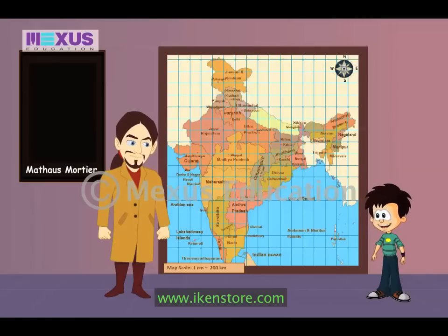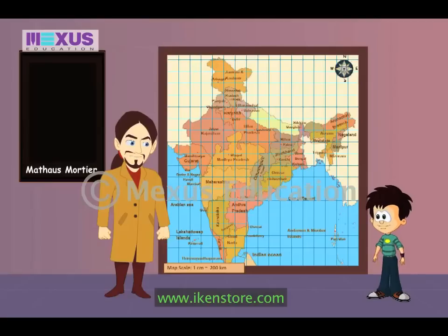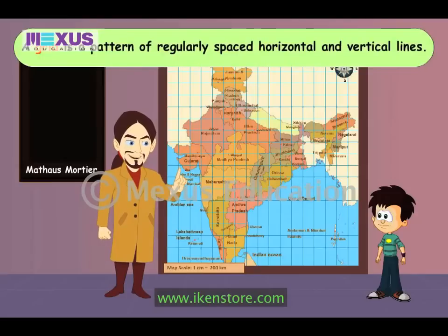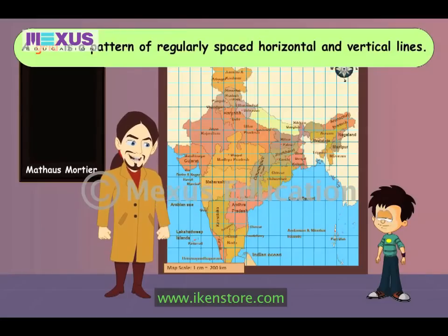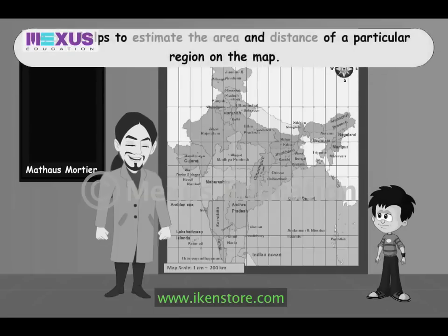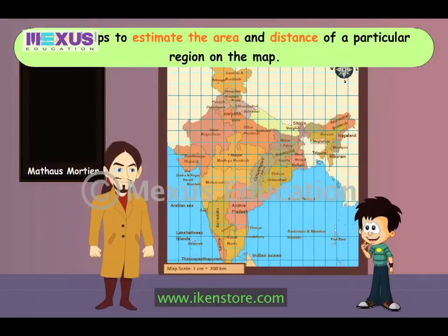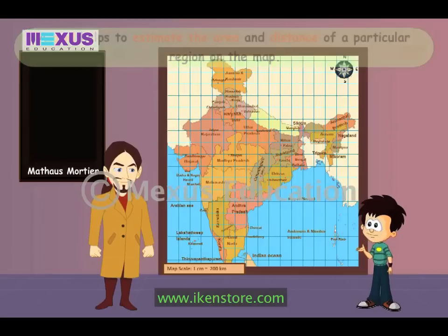Hey Matt! Why are there so many squares on this map? Well, this is a grid. What's a grid? A grid is basically a pattern of regularly spaced horizontal and vertical lines. Grids help us to estimate areas and distances on maps — area and distance both!